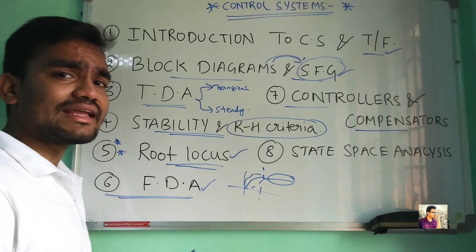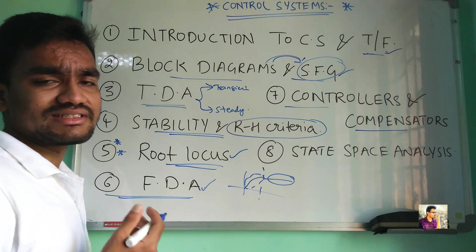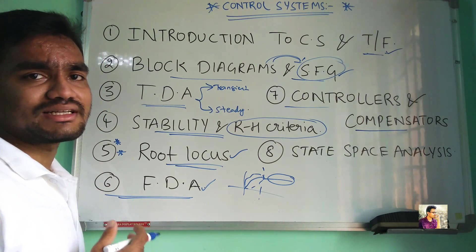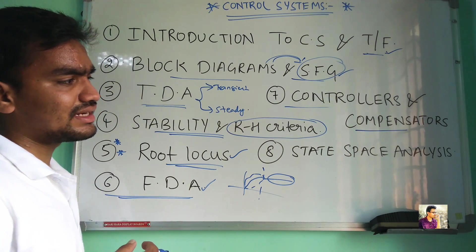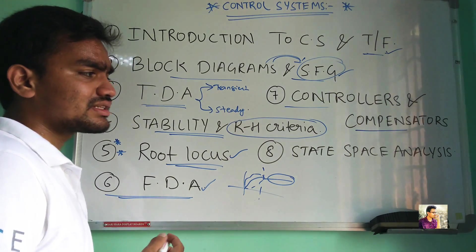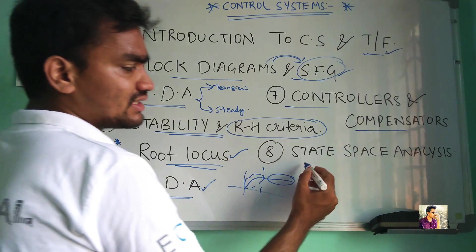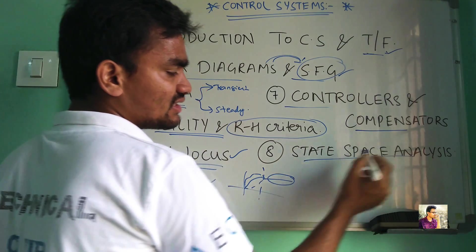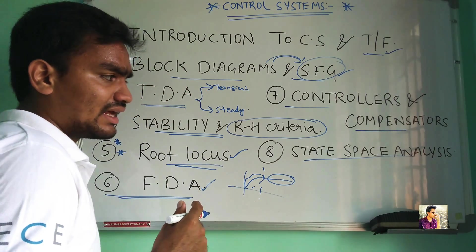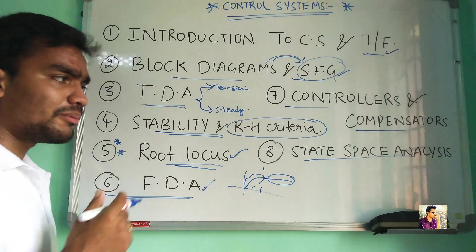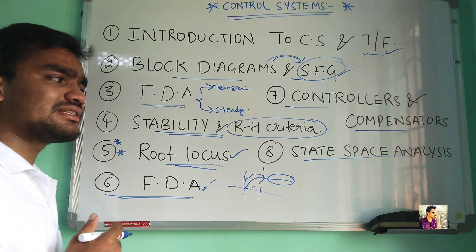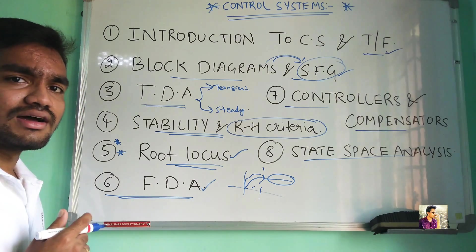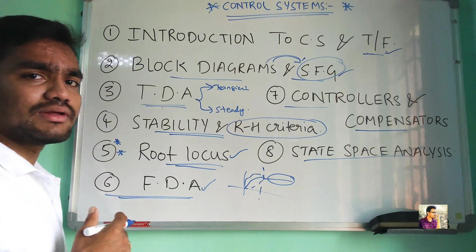Next we are going to discuss about controllers and compensators — we are going to discuss about the lead compensator, lag compensator, and lead-lag compensators. Next we are going to discuss about state space analysis. If the analysis becomes complicated, by using state space analysis we can resolve it more simply.